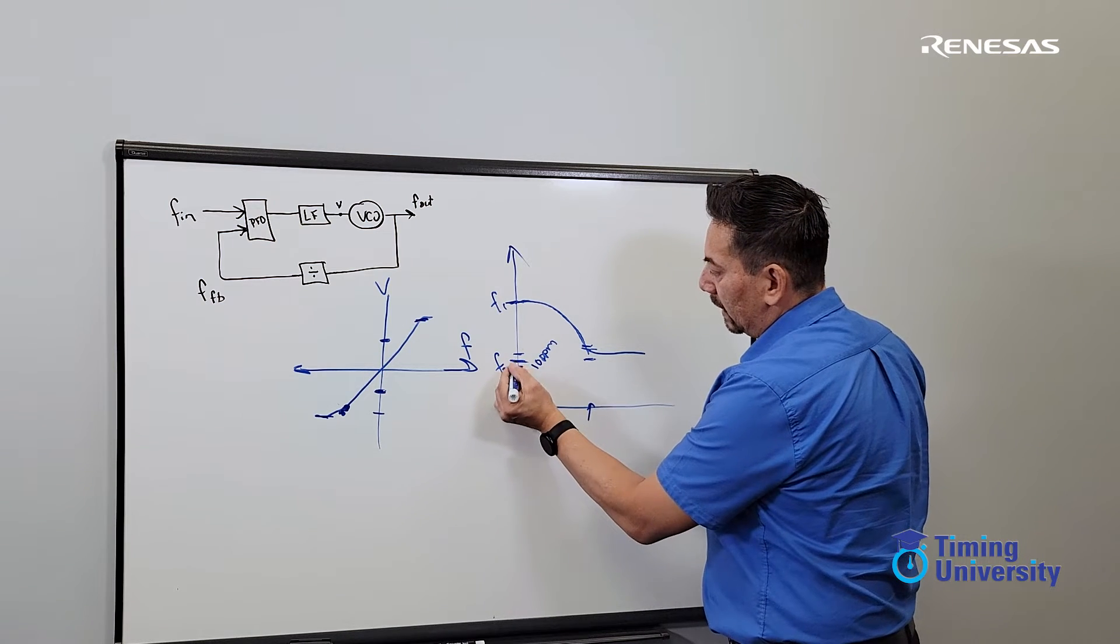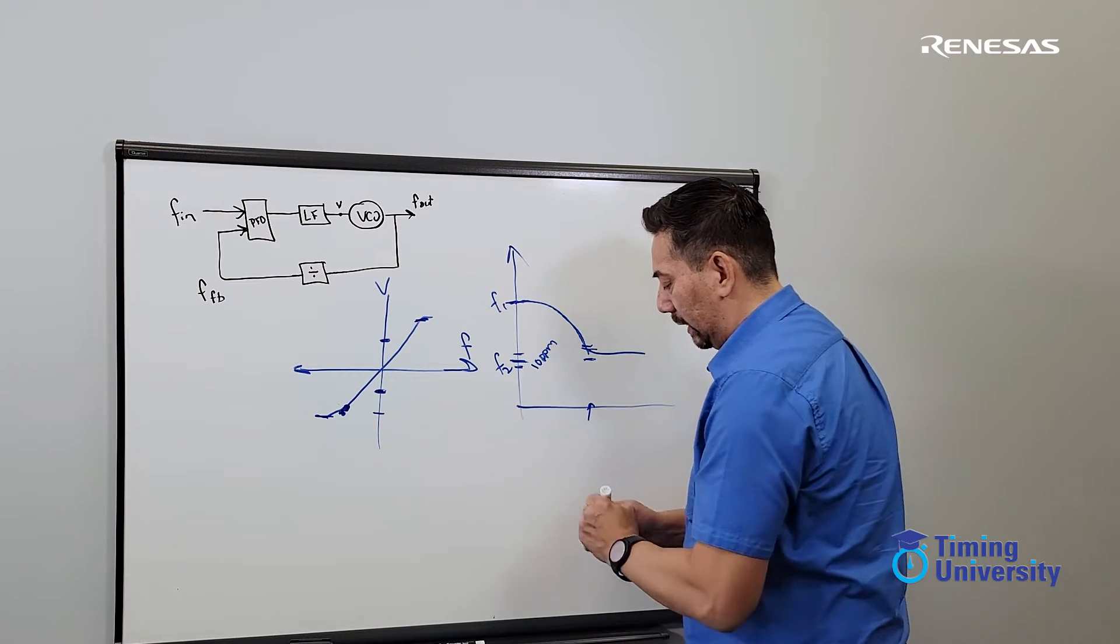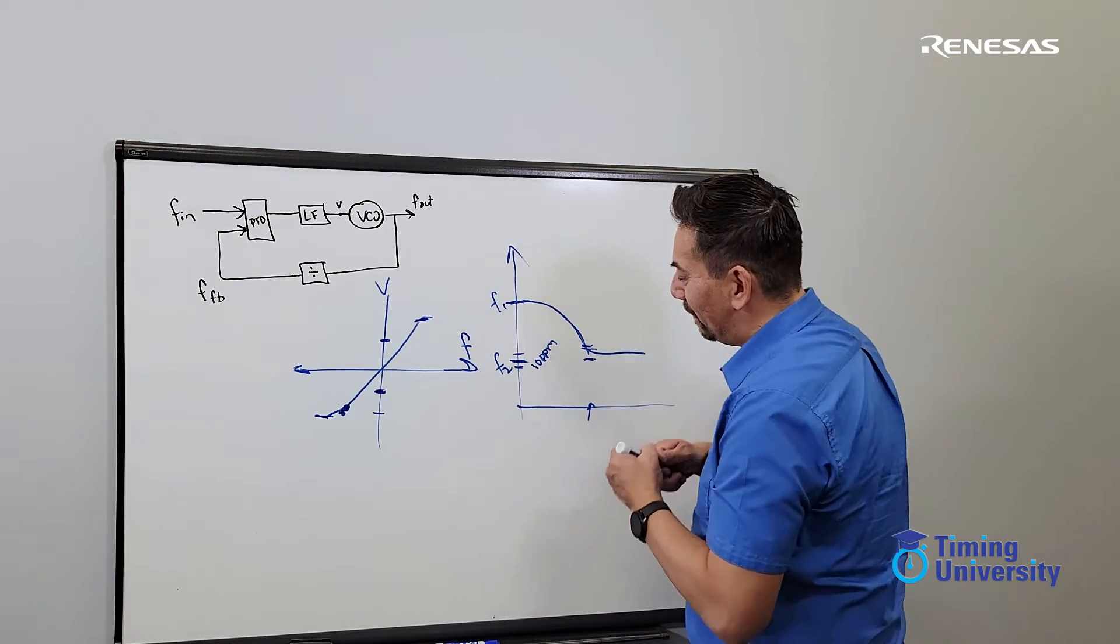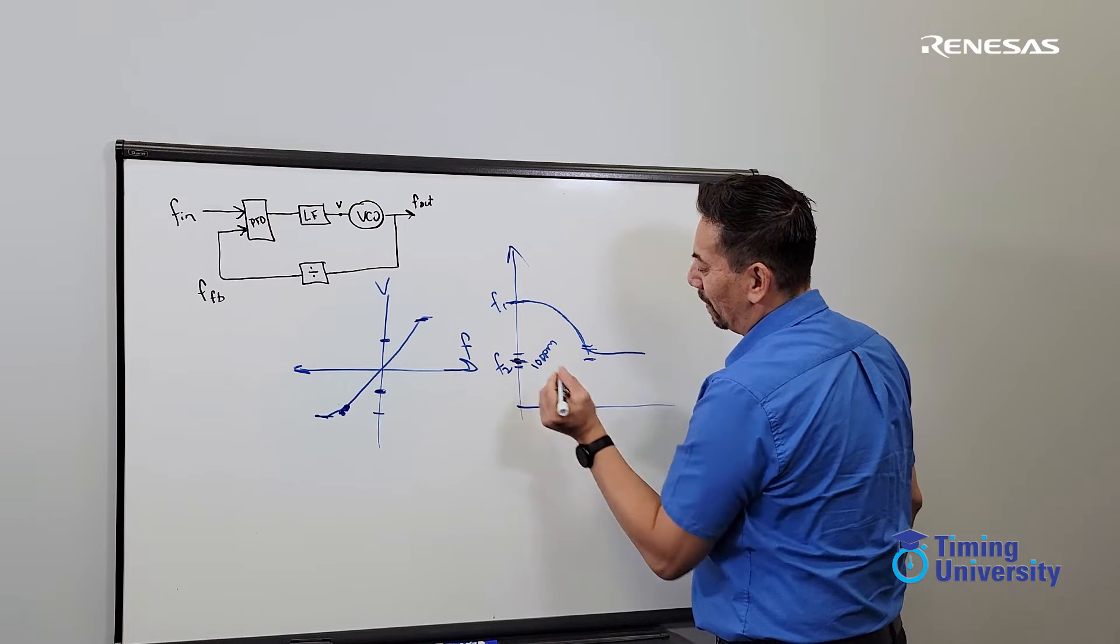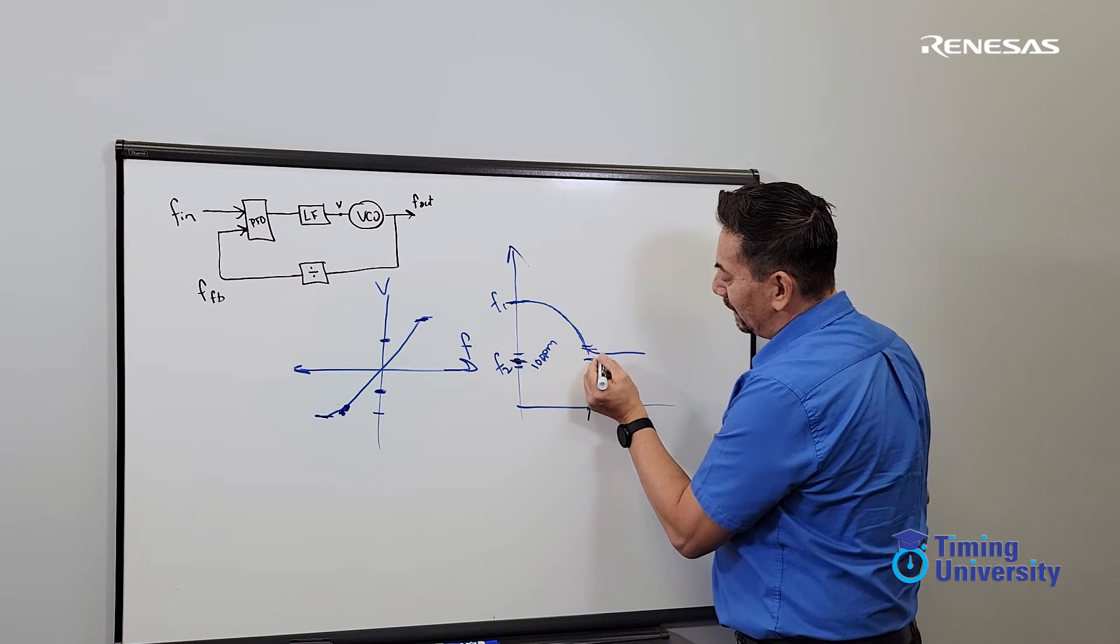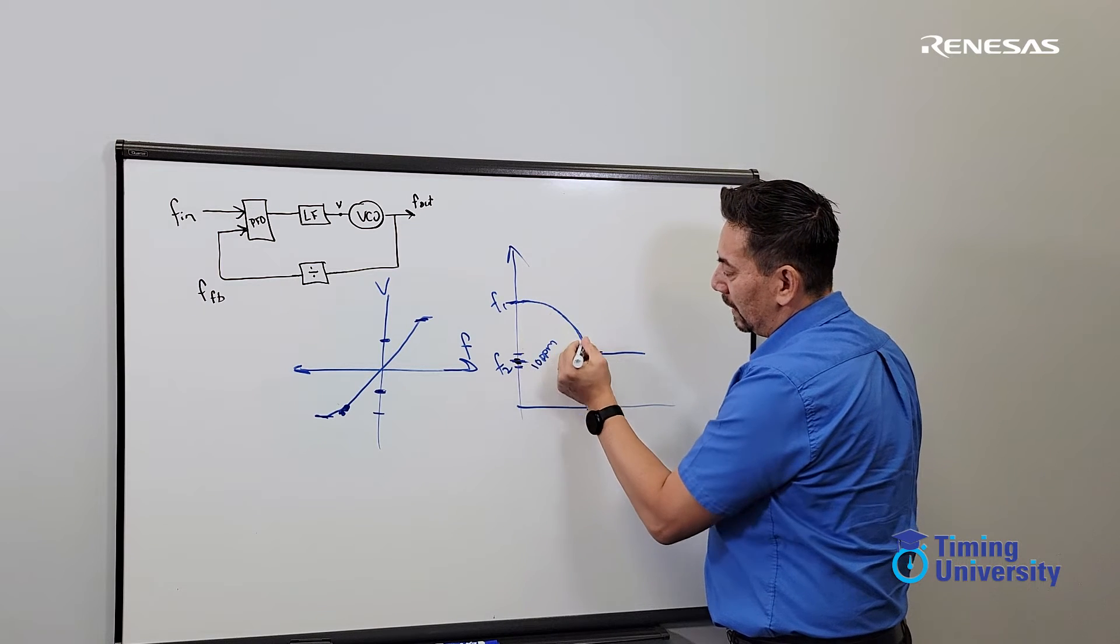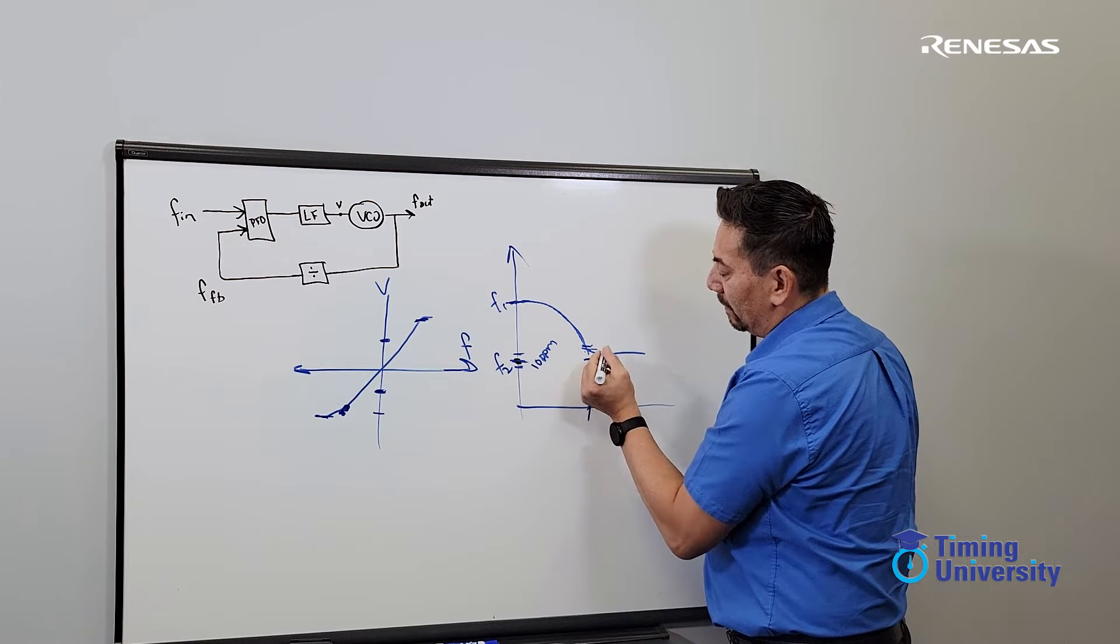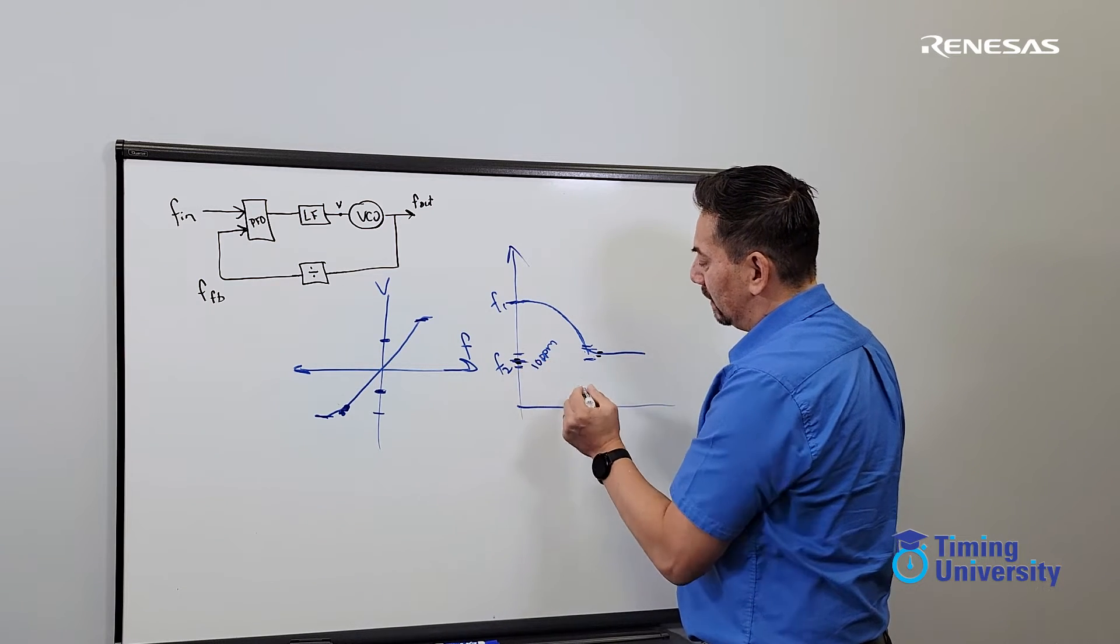But this is a frequency lock. In other words, we can even say instead of having 10 PPM, we want one part per billion. So you make this even a very tight, I'm just exaggerating, one part per billion. But what that means is it might take the PLL longer to settle in to that very tight frequency window. So the tighter the lock criteria, the longer the lock time.